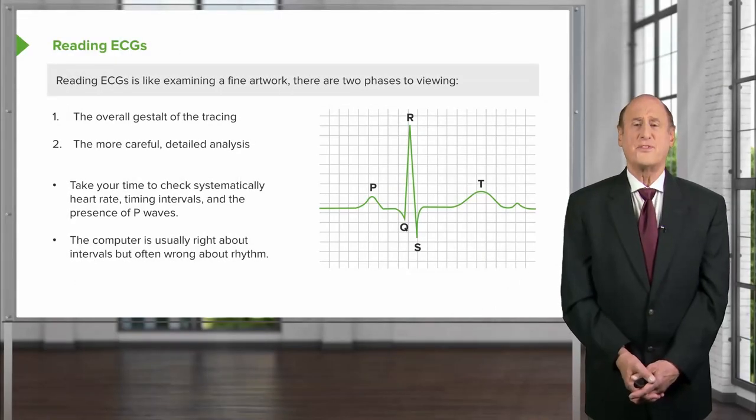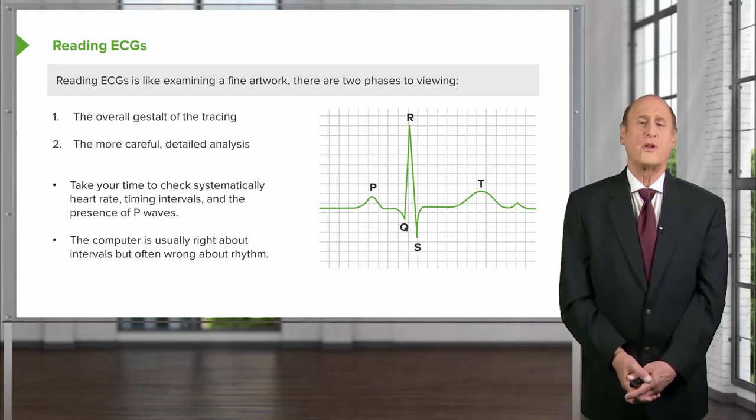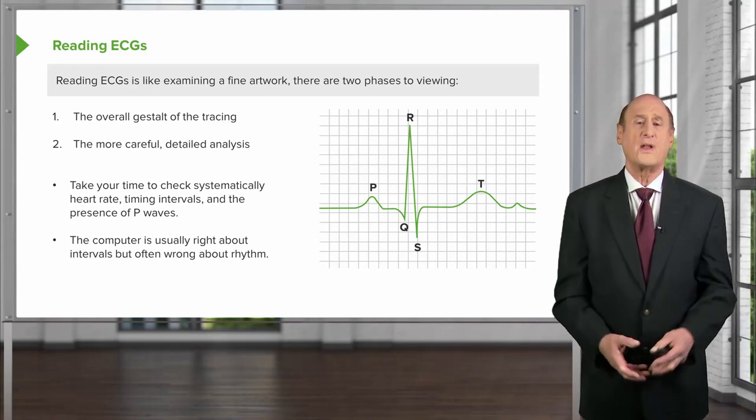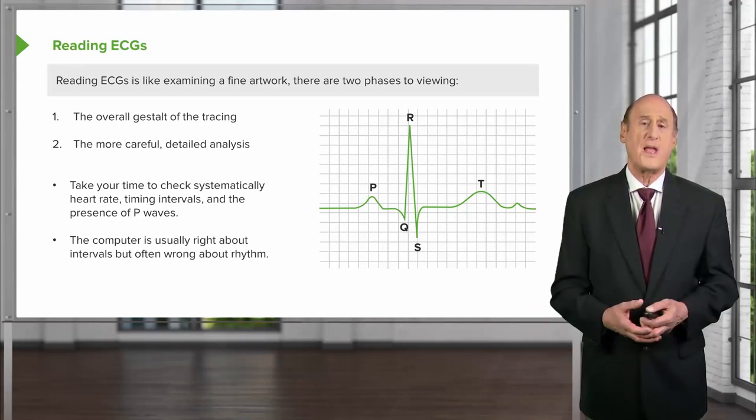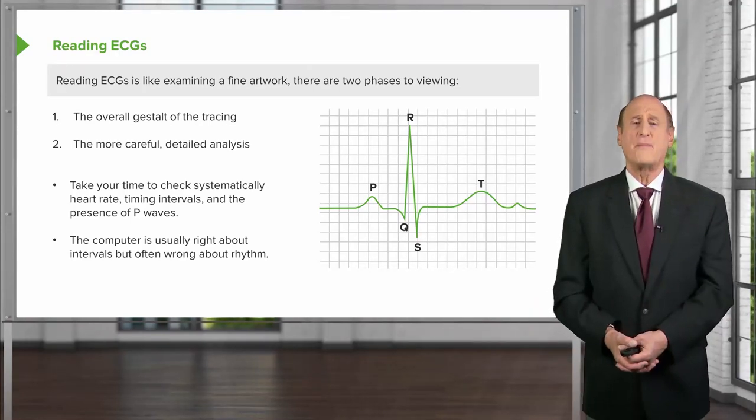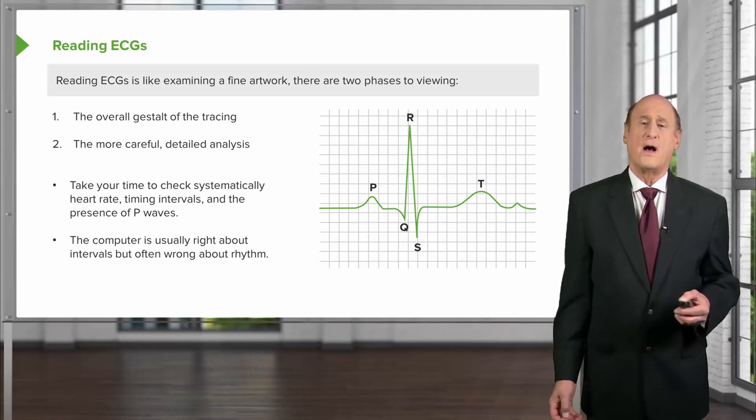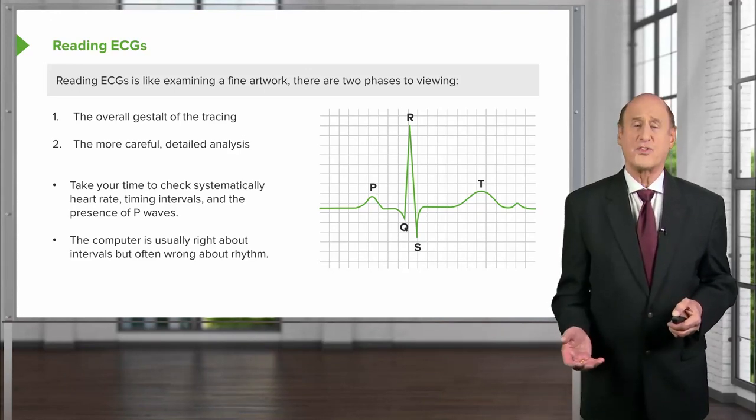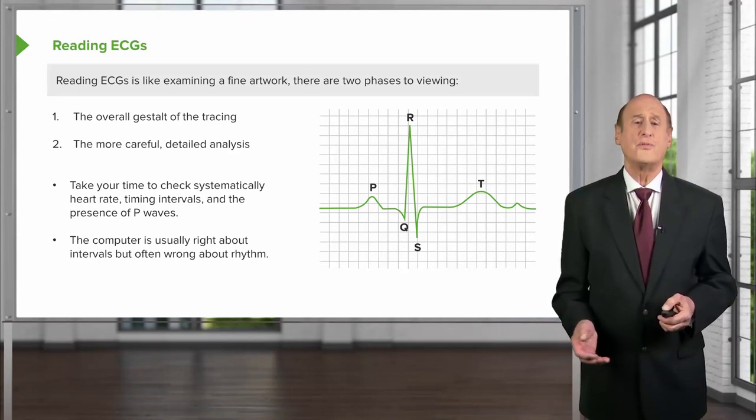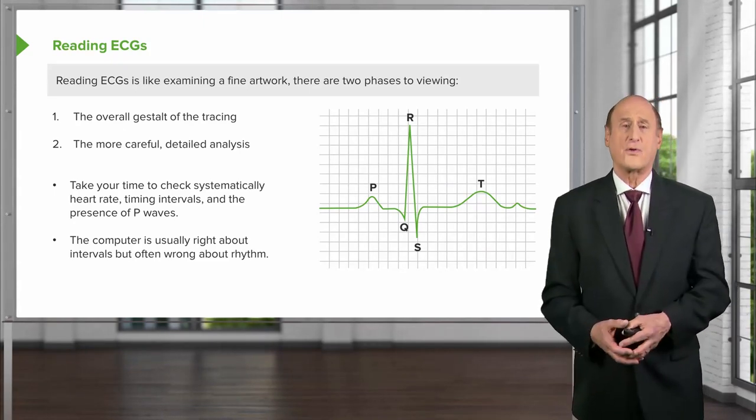Remember, many times you're going to be seeing an electrocardiogram that's been recorded by a computer, and the computer will have read a diagnosis—it'll give you some information. The computer is usually right about heart rate and intervals, but it's often not right about the underlying rhythm and sometimes it even makes more serious mistakes. So every computerized electrocardiogram has to be over-read by an experienced electrocardiographer.